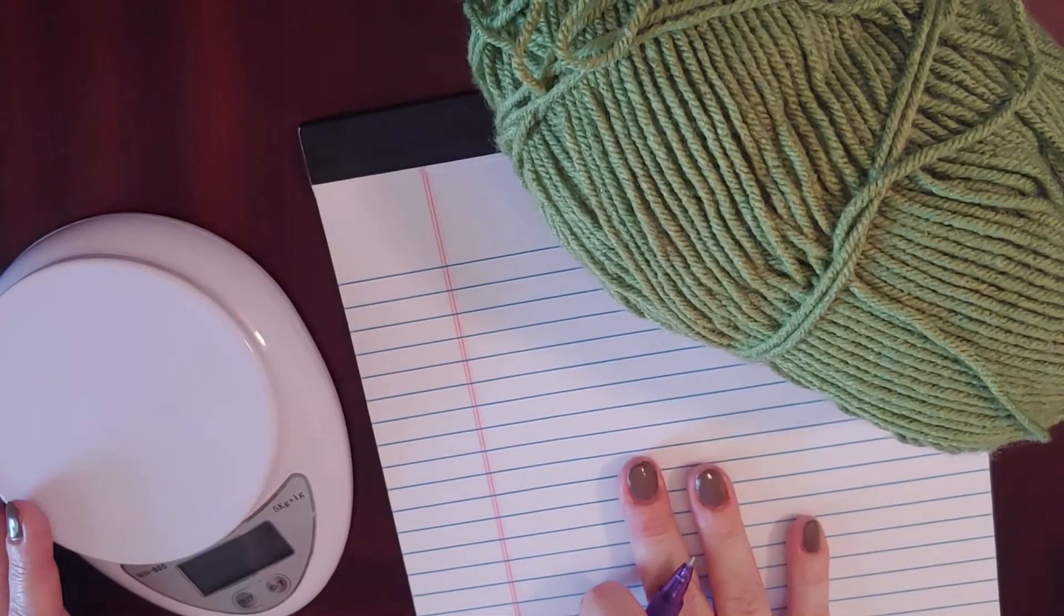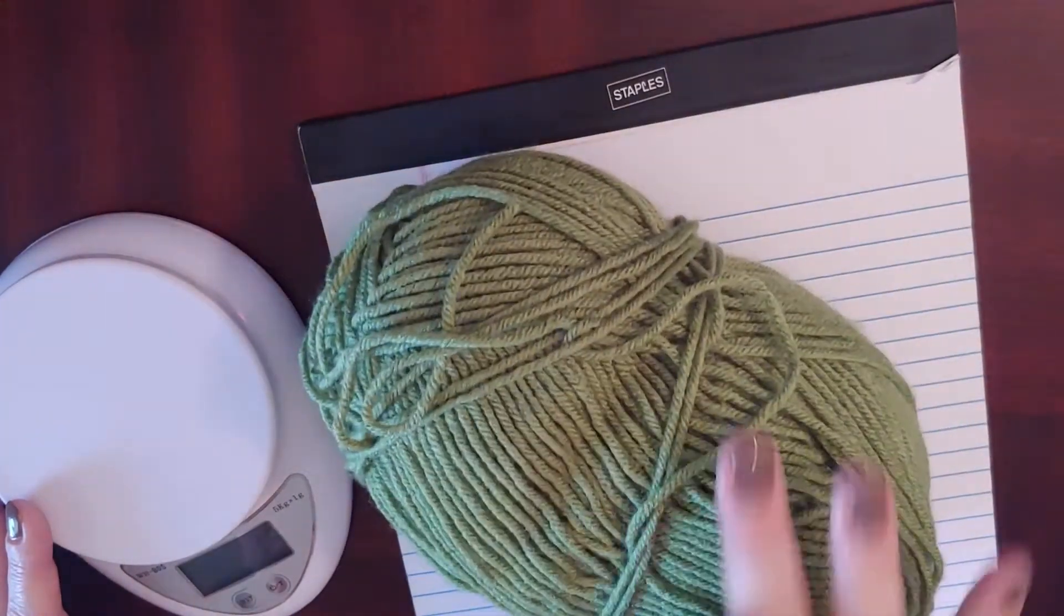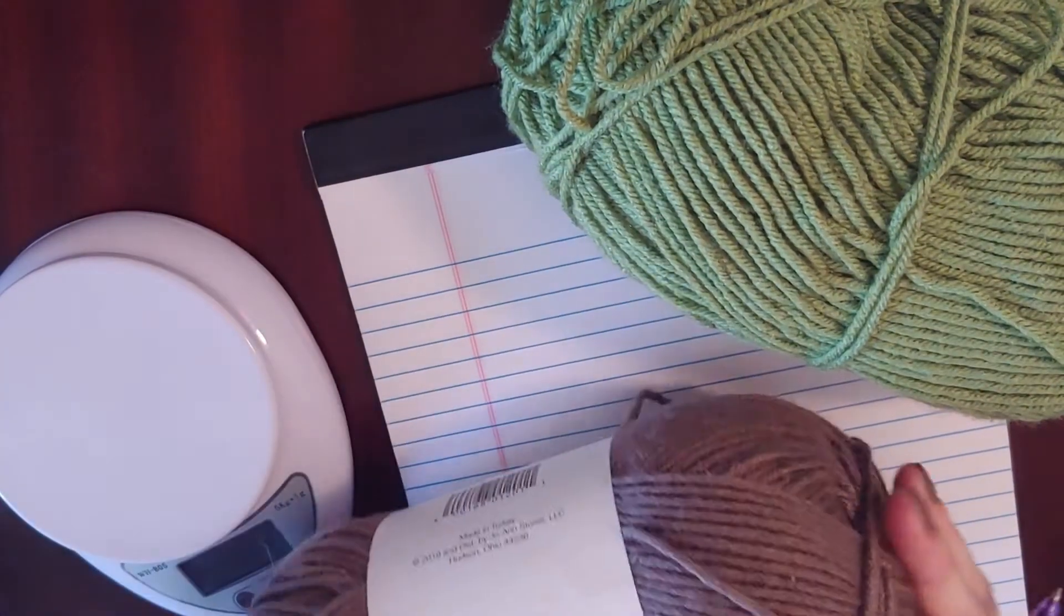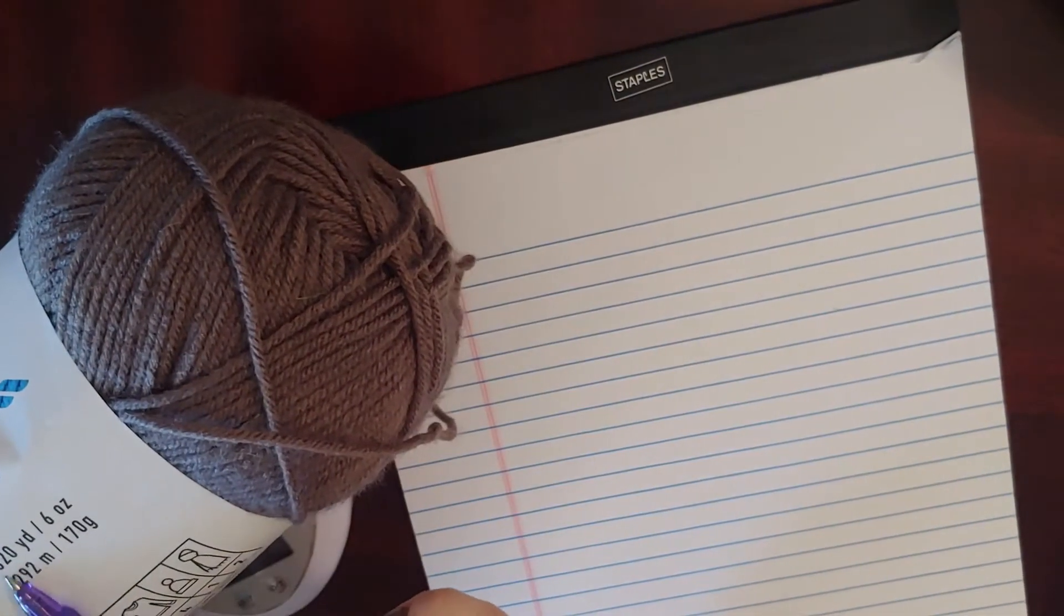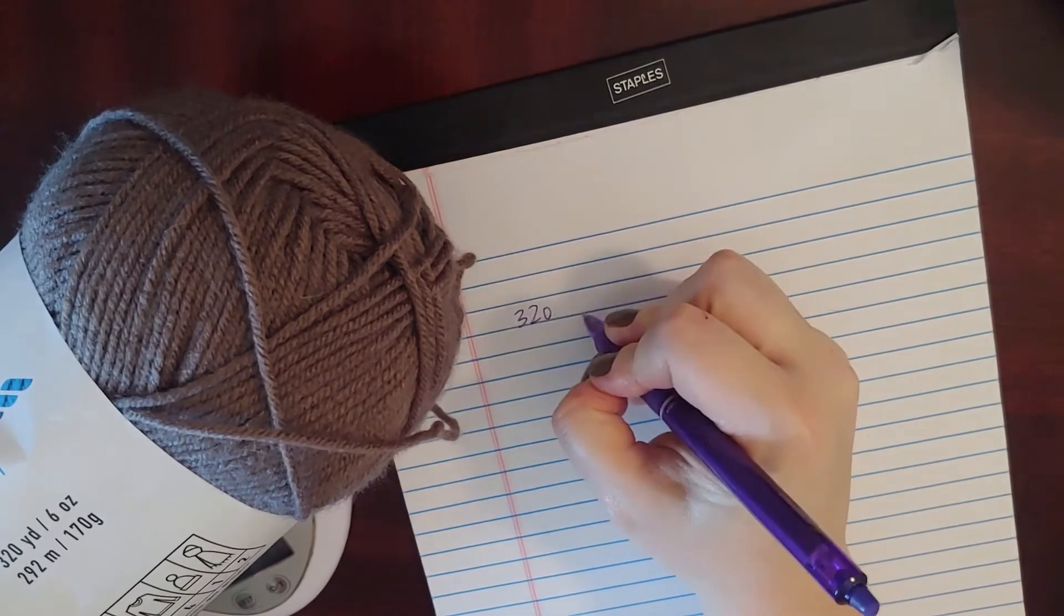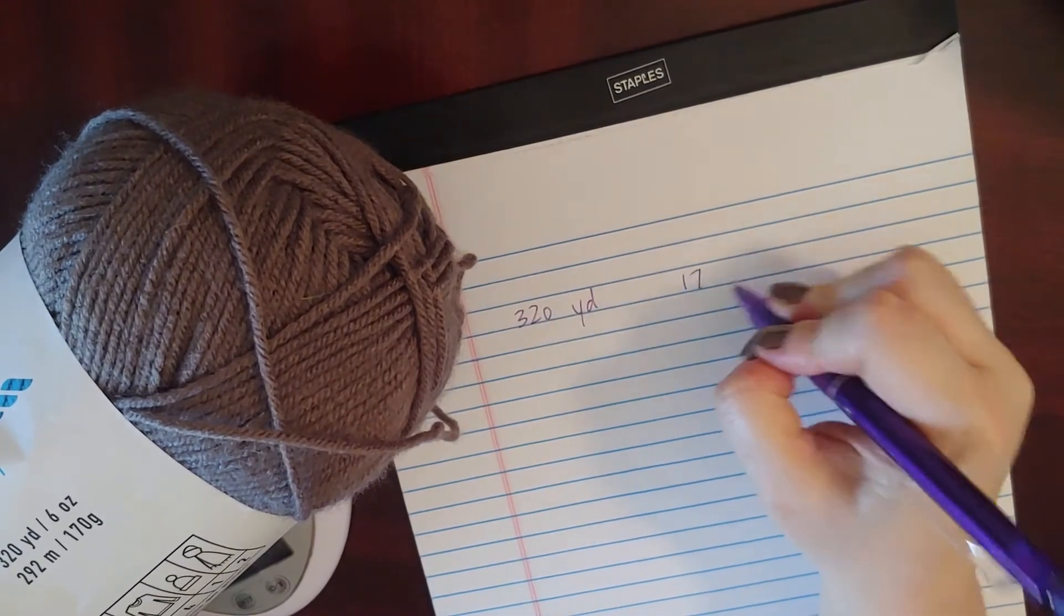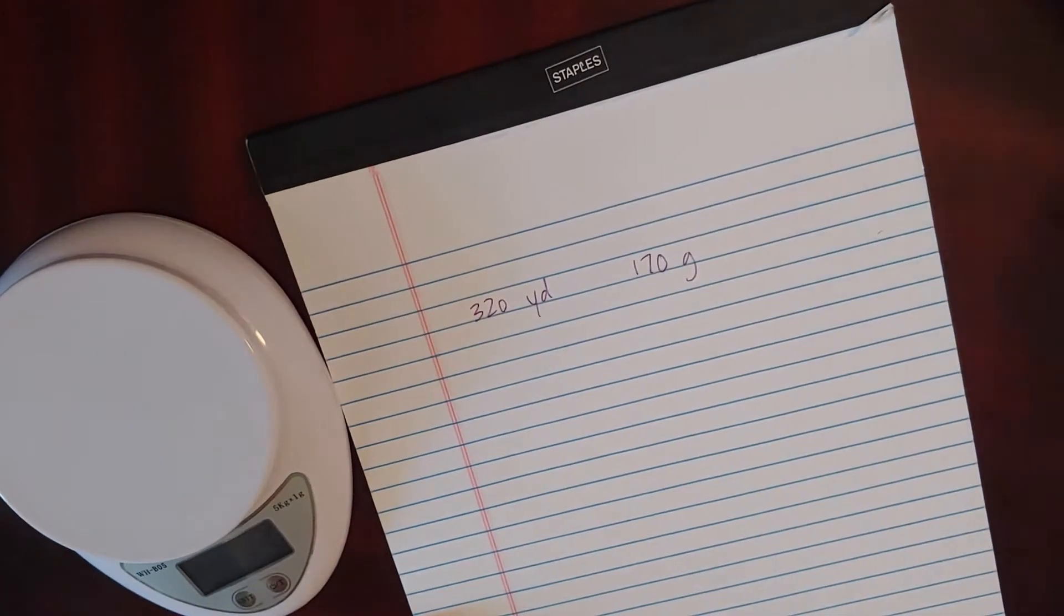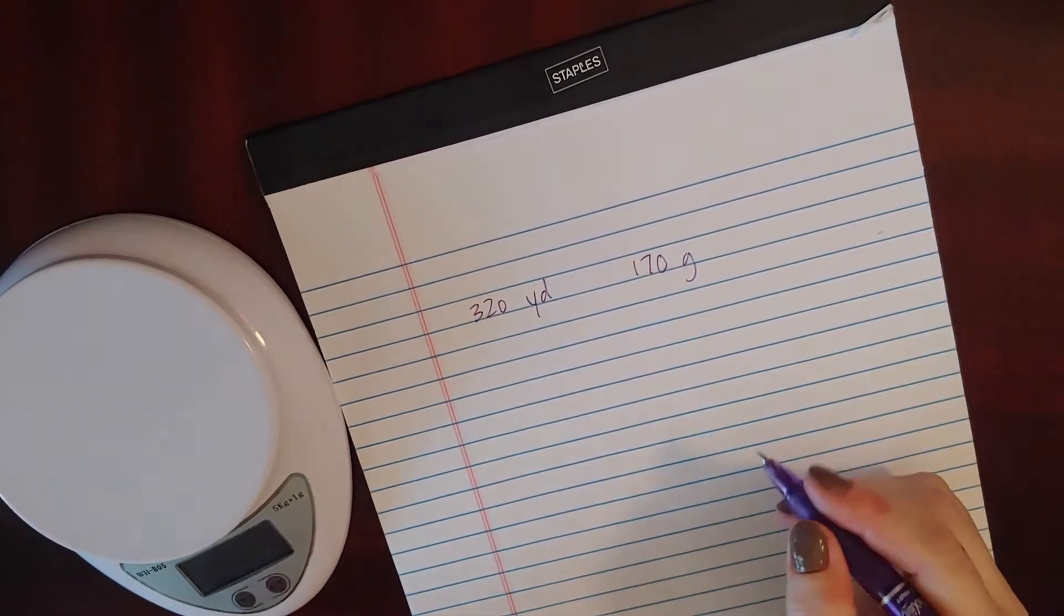We're going to assume for the purposes of this video that you know what this yarn is, that it's not mystery yarn. In this case it is Big Twist Soft. This is the same yarn, just in a different color. You're going to want to get the yardage and the weight in grams from the label, but you can also get it from the manufacturer's website if you don't have the label.